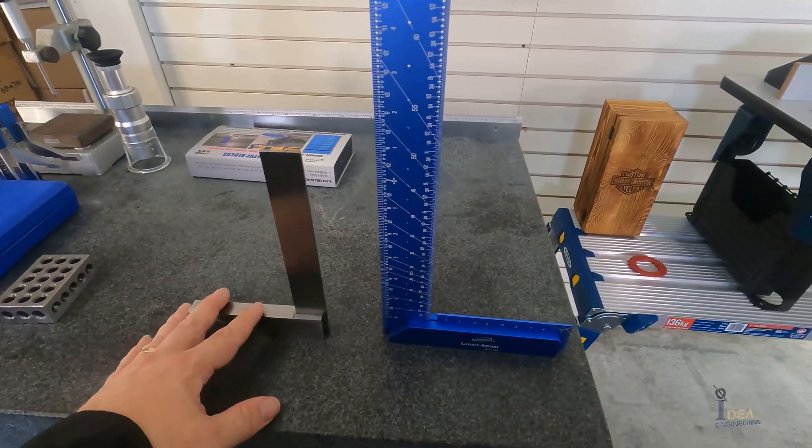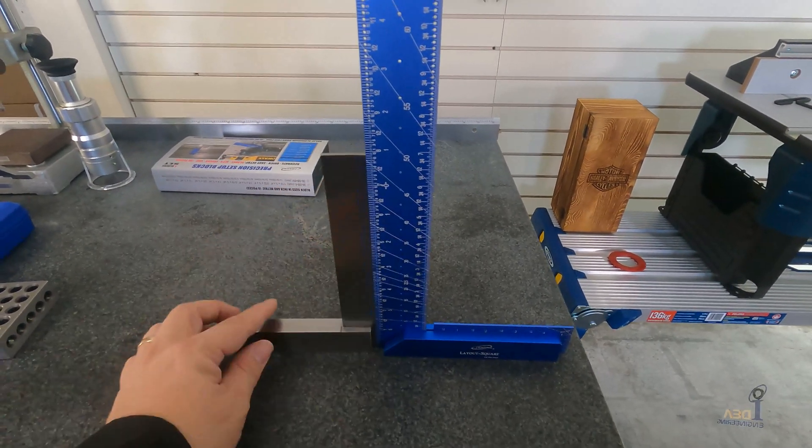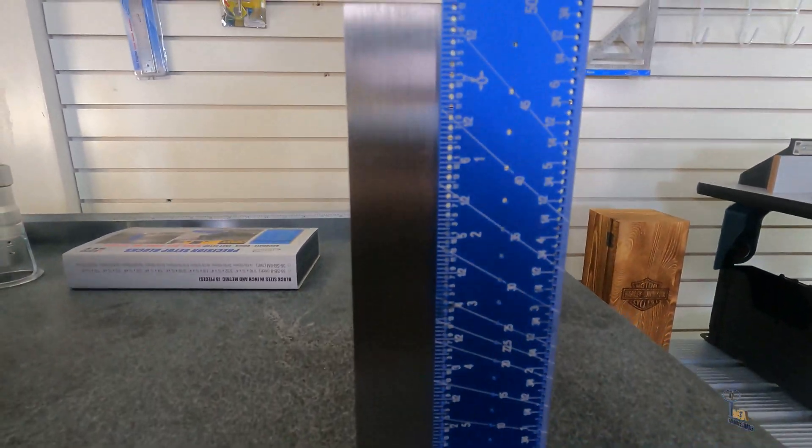Let's check the squareness of these new squares. You can see on the flat table here that they are perfectly square, lined right up. Can't see any light through.